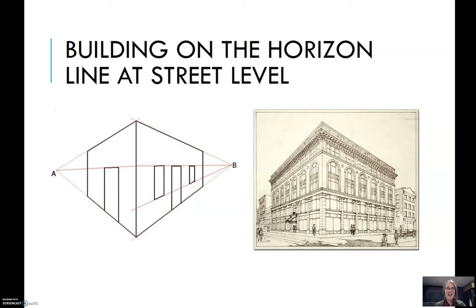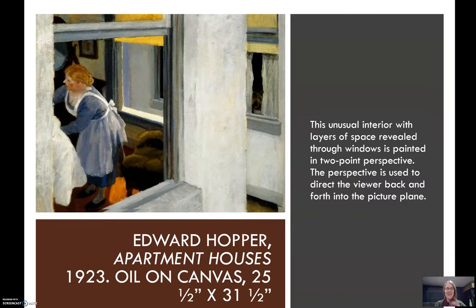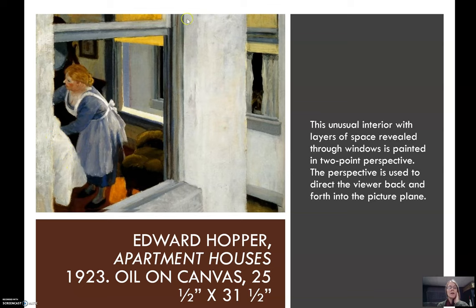Here we have a painting by Edward Hopper called 'Apartment Houses,' created in 1923, oil on canvas. This would have been during the modern art period. This is an unusual interior — it actually has layers of space revealed through windows that are painted in two-point perspective. The perspective is used to direct the viewer back and forth into the picture plane. Over here on the left we see a window into an apartment building and we see a woman who looks like maybe she's putting a tablecloth on a table.